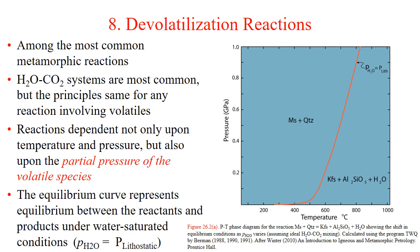Reactions that release or consume volatiles are among the most common reactions in metamorphism. Water and carbon dioxide are by far the most common, but any volatile species may be involved under the right circumstances. Because of the addition of the volatile phases, reactions are dependent not only on pressure, temperature, and composition of the rock, but also upon the partial pressure of the volatile components involved.